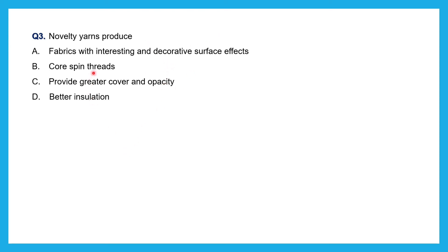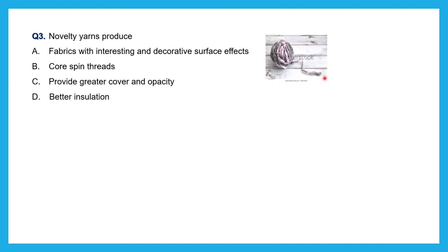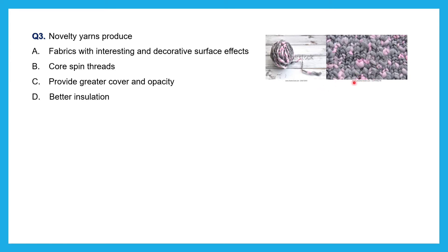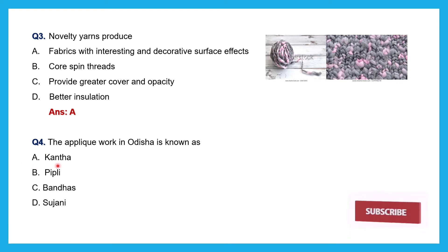Third question: Novelty yarns produce fabrics with — interesting and decorative surface effects, coarse pin threads, greater cover and opacity, or better insulation? Novelty yarns are nothing but fancy yarns. When fibers are twisted with irregular twist at equal intervals, they produce a fancy yarn. When fabric is made with this fancy yarn, it gives a beautiful surface effect. So the answer is: novelty yarns produce fabrics with interesting and decorative surface effects.